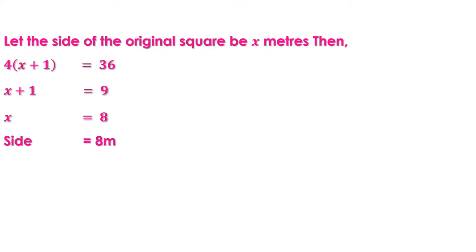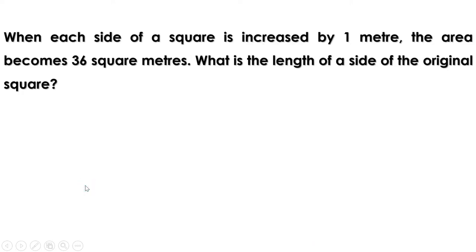If the side is increased by 1 it becomes 9 meters, then the perimeter is 4 × 9 = 36. Now let us slightly change the problem: when each side of a square is increased by 1 meter, the area becomes 36 square meters. What is the length of a side of the original square? Here the area is 36 square meters, whereas in the previous question the perimeter was 36 meters.